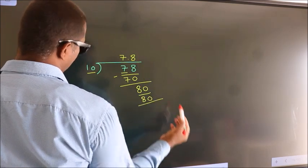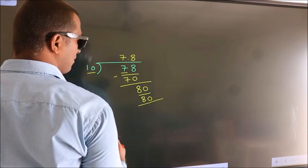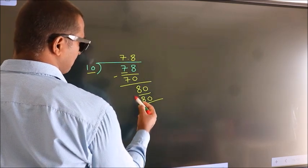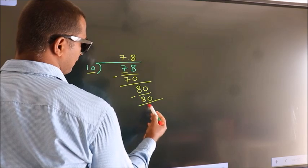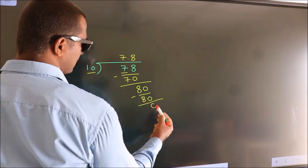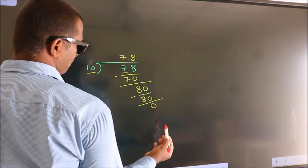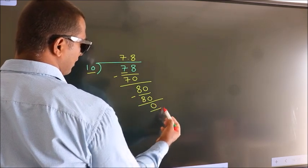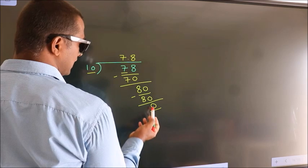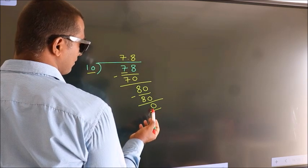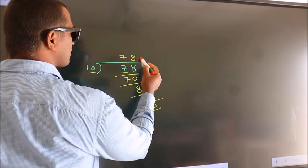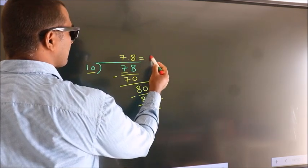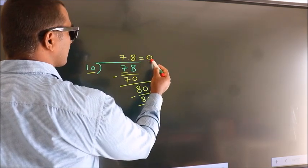Now we subtract and we get 0. Here we got remainder 0, so this is our quotient.